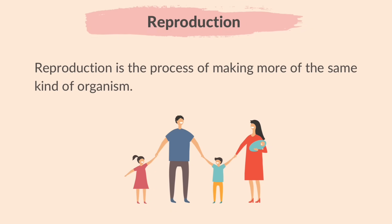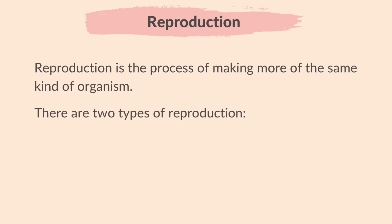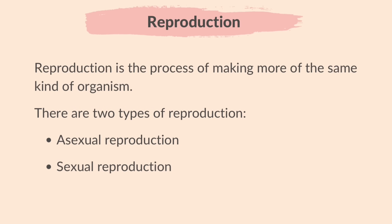Reproduction is the process of making more of the same kind of organism. There are two types of reproduction that you need to be aware of: Asexual Reproduction and Sexual Reproduction.